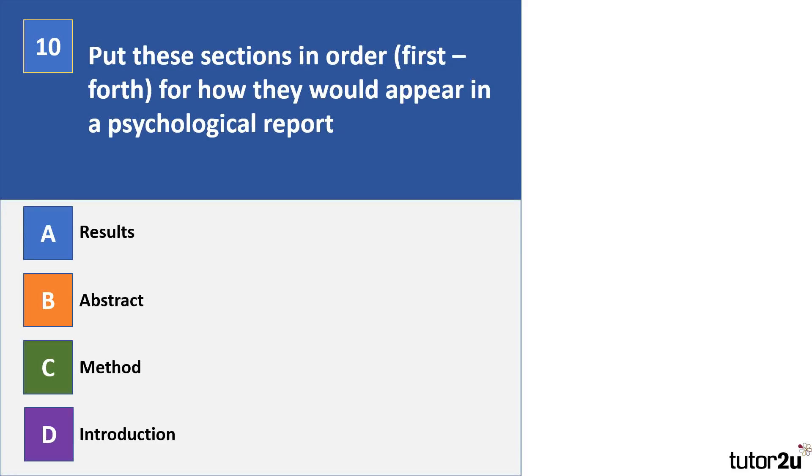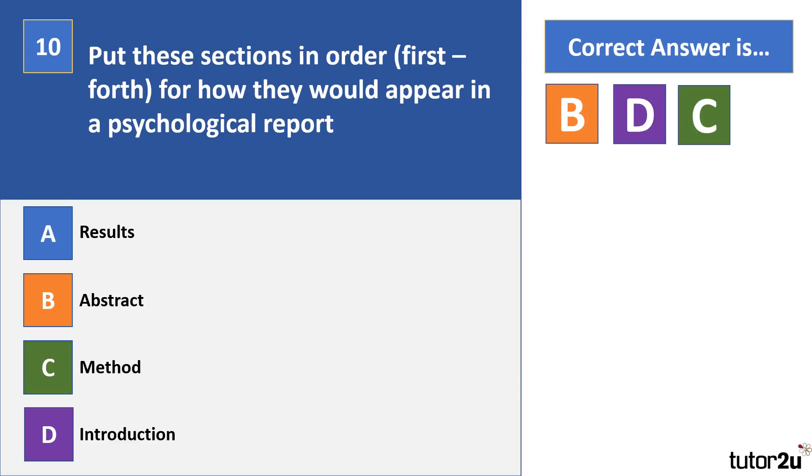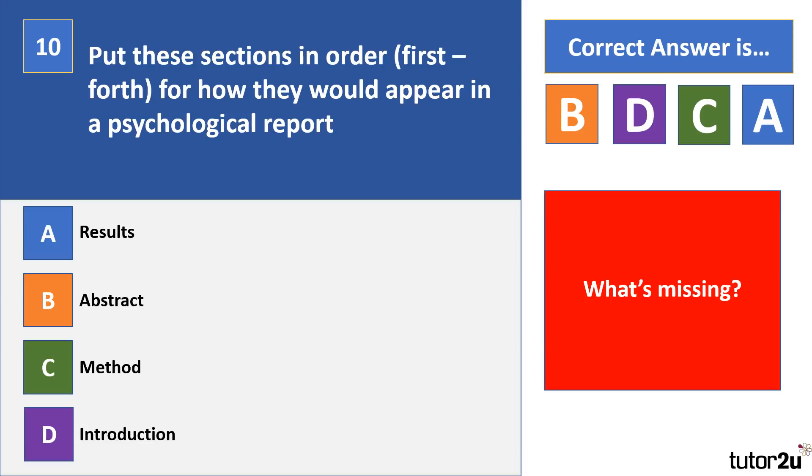Question 10: Put these sections in order, first to fourth, for how they would appear in a psychological report. So you're going to give me four letters in a particular order for the order that they appear here. Pause your video. Right, your correct answer is B, D, C, A, so abstract, introduction, method, results.